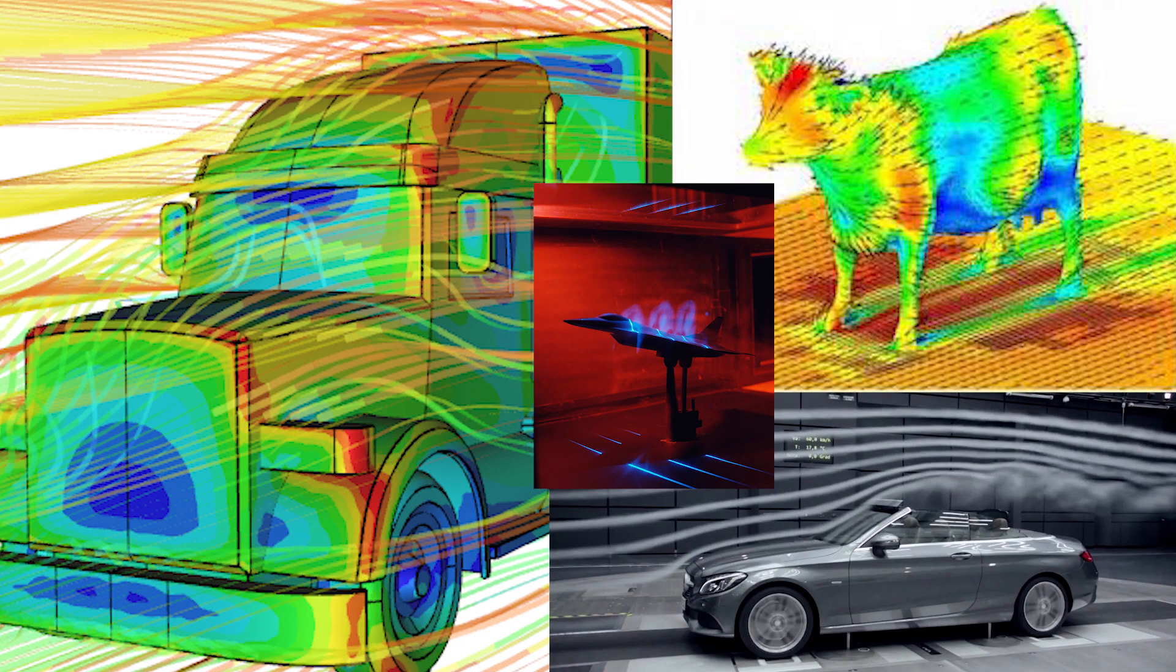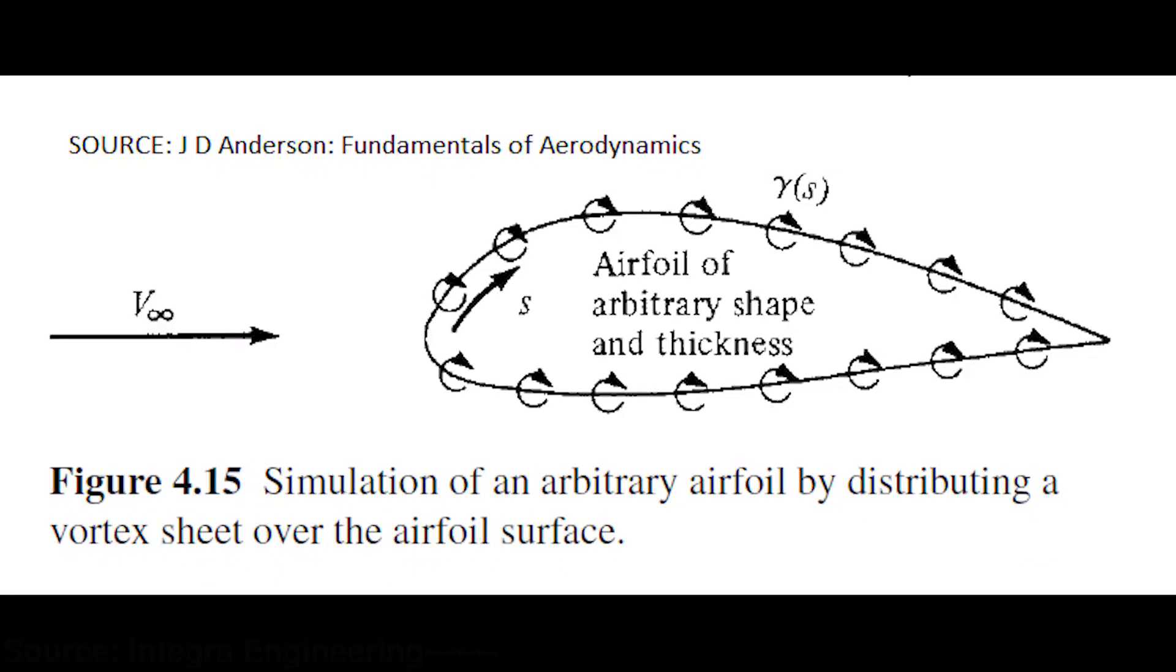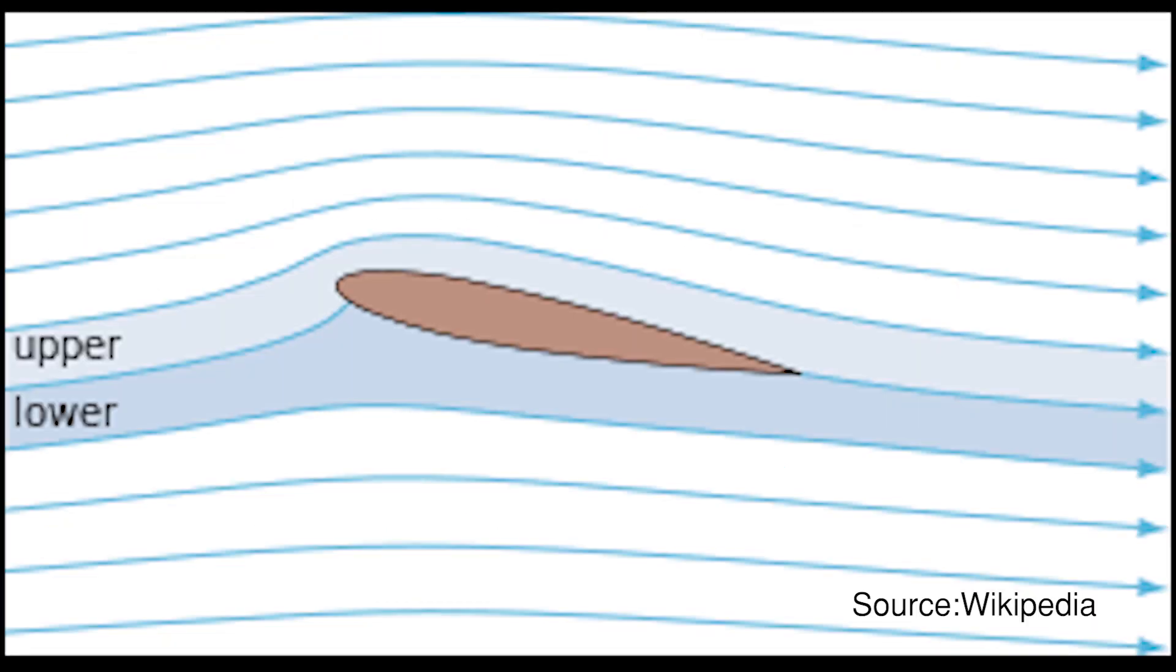To show how powerful this tool can be, consider the flow around an airfoil. Consider a uniform flow superimposed on a line of vortices called a vortex sheet. By using this combination along with a condition called Kutta condition, we can simulate the exact flow around an airfoil.